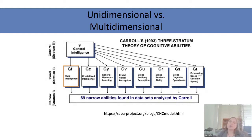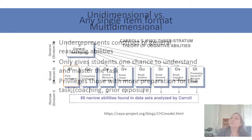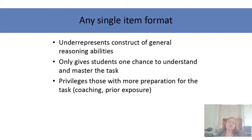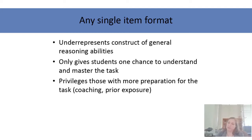A test like COGAT is called multidimensional because we measure general ability with multiple formats. The benefit is it gives students multiple opportunities to demonstrate ability. Any single format under-represents the construct of general reasoning, whereas a multidimensional test like COGAT adequately represents that construct. So instead of just measuring figural reasoning skills, it measures reasoning skills with words, reasoning skills with numbers, as well as abstract reasoning — giving you a better composite.